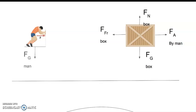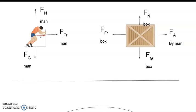Now let's do the man. We've got force of gravity on the man and force normal on the man. And when his feet push against the floor, it's force of friction that pushes him forward and prevents his feet from sliding.